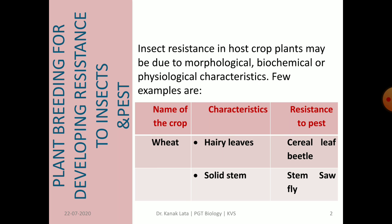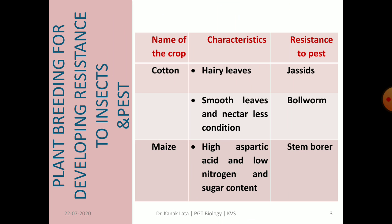Let us see the crop name, its characteristics, and resistance to pest. First is wheat: when it has hairy leaves, it is resistant to cereal leaf beetle; when it has solid stems, it is resistant to sawfly. Next is cotton: hairy leaves make it resistant to jassids; smooth leaves and nectar-less condition make it resistant to bollworm. Maize with high aspartic acid and low nitrogen and sugar content is resistant to stem borer.